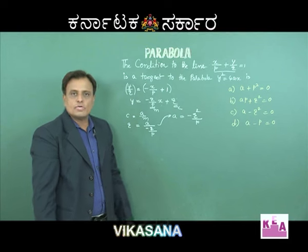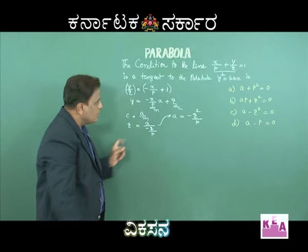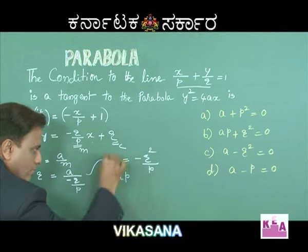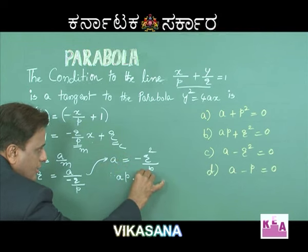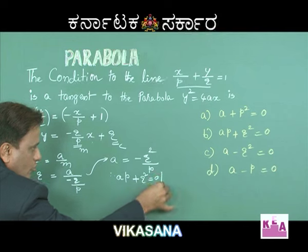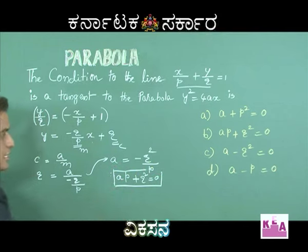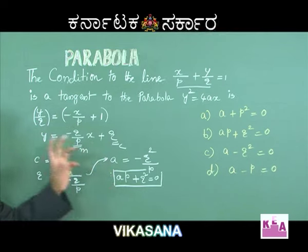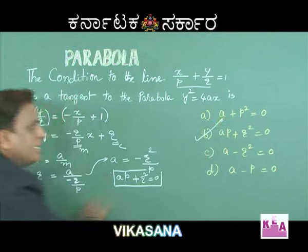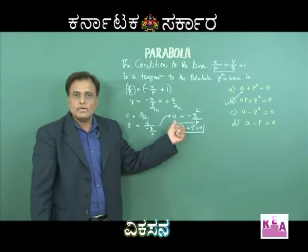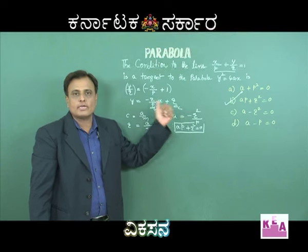Therefore, after simplification, ap + q² = 0. The required answer is ap + q² = 0. The right option for this question is option B: ap + q² = 0.